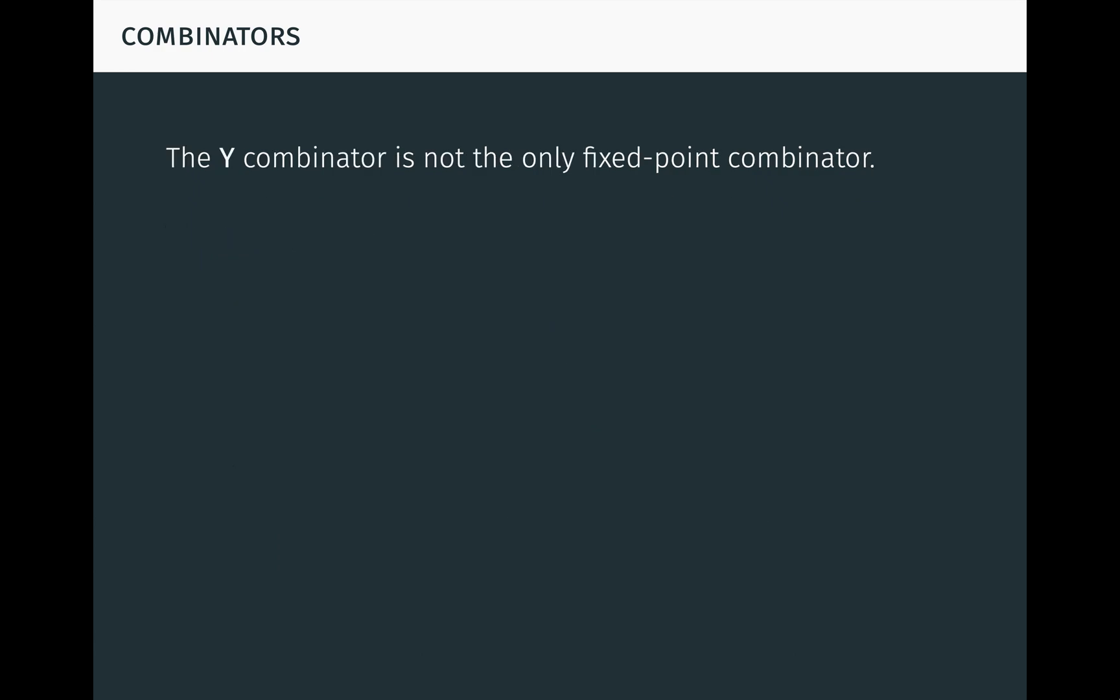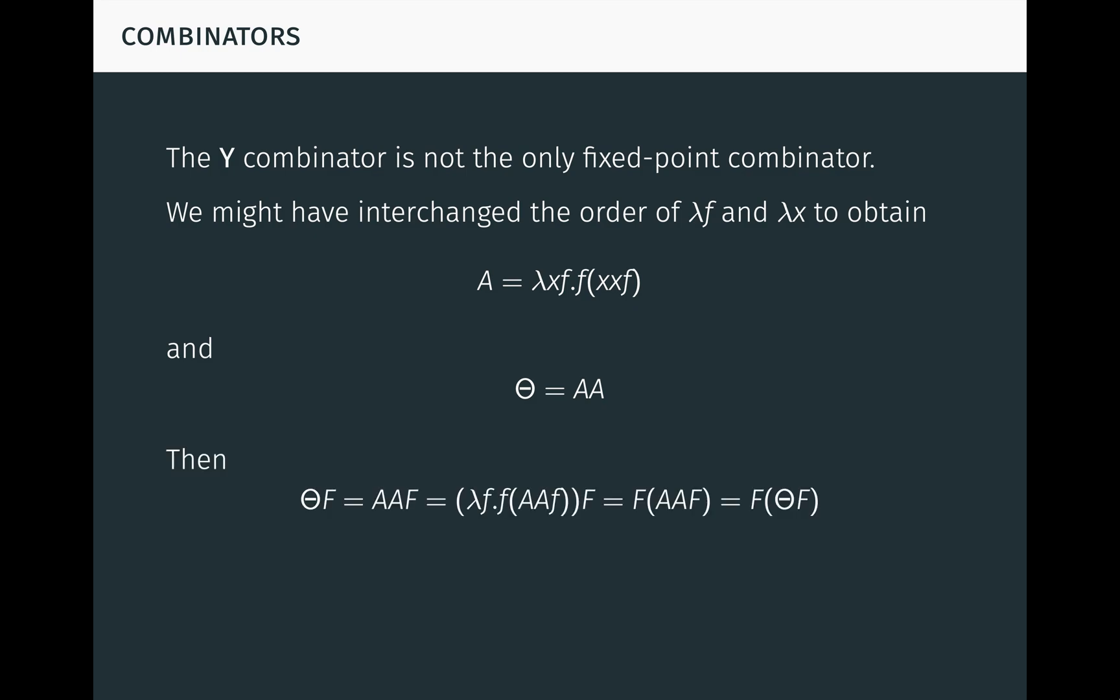But the y-combinator is not the only fixed-point combinator. For example, we might have interchanged the order of lambda f and lambda x in the definition of the y-combinator to obtain a, which is defined to be lambda x f f of x x f, and theta, which is defined to be a a. Then it's easy to see that theta f is a fixed-point of f. This is Turing's fixed-point combinator, and it has certain advantages over the y-combinator. There are also infinitely many others. Again, we see the power and ubiquity of fixed-points in mathematics.